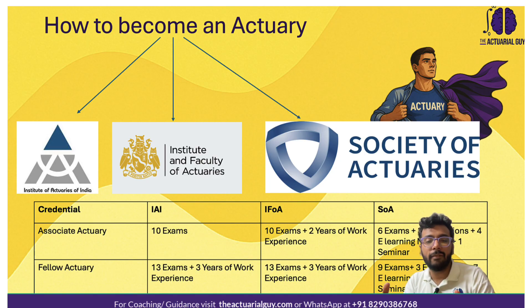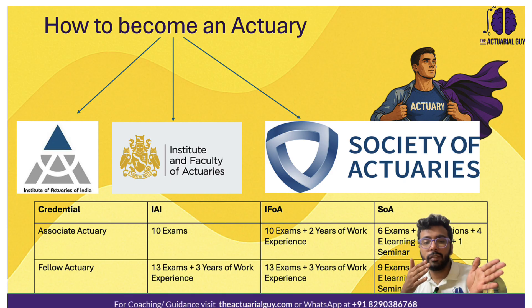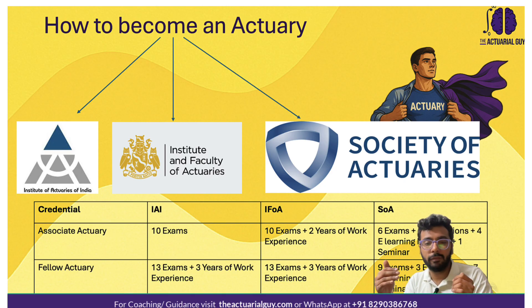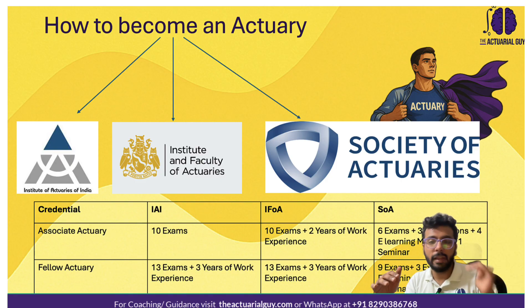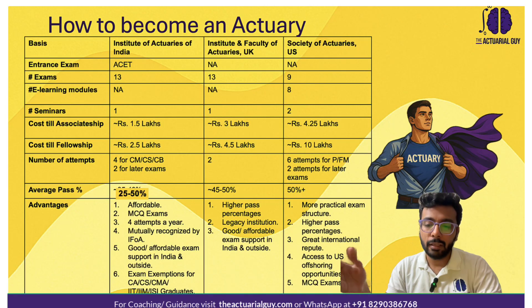The final level you're trying to reach is the fellow actuary level. In the case of IA, that requires 13 exams and three years of work experience. That's what being an associate and a fellow means.